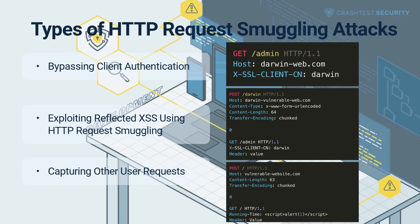Exploiting reflected XSS using HTTP request smuggling — HTTP request smuggling simplifies reflected XSS exploits since it does not require interaction with legitimate users. The attacker only needs to create a smuggled request with the XSS payload, which will be processed with the next application user's request. Assuming an application is found to contain a reflected XSS vulnerability in the User-Agent header, the attacker can craft an HTTP request smuggling attack as shown in the sample in the video.